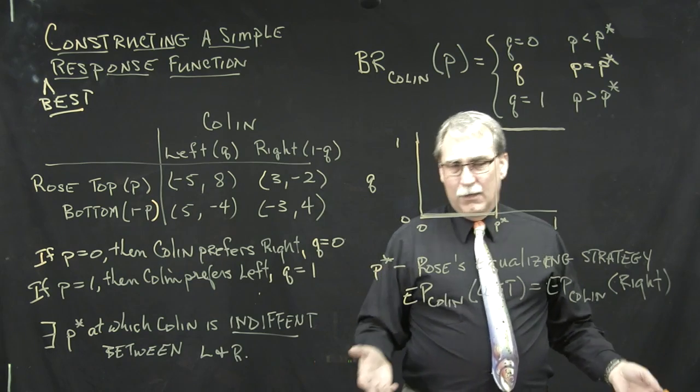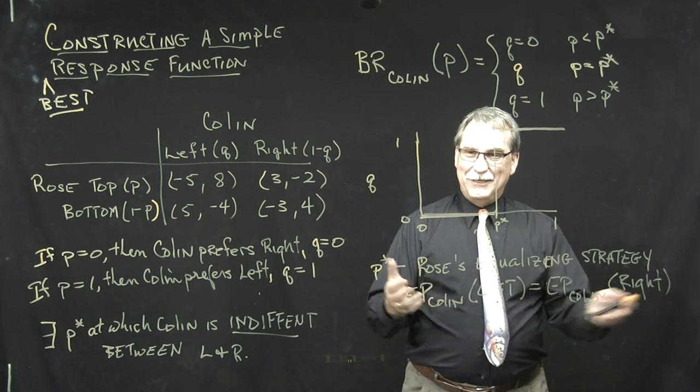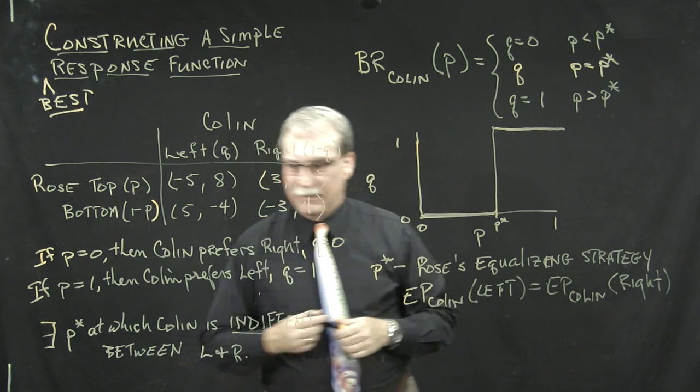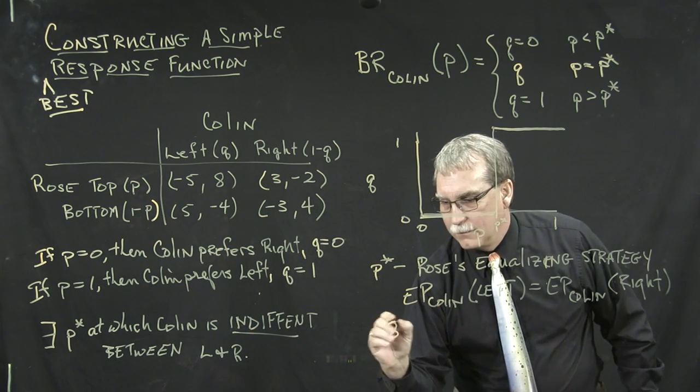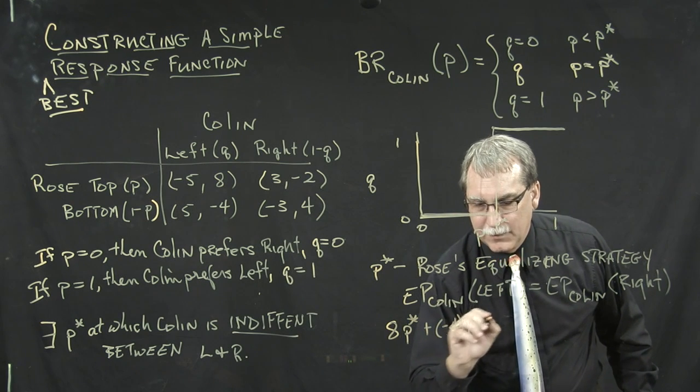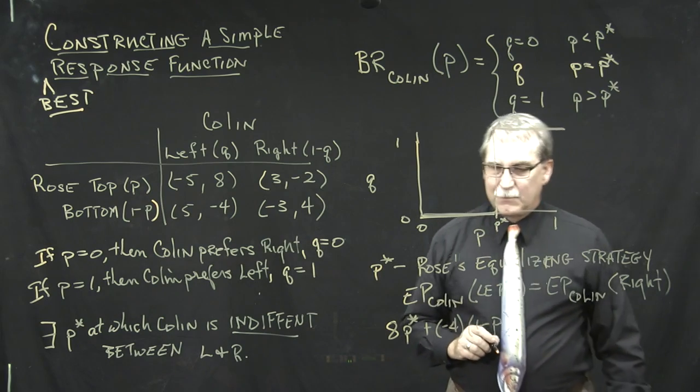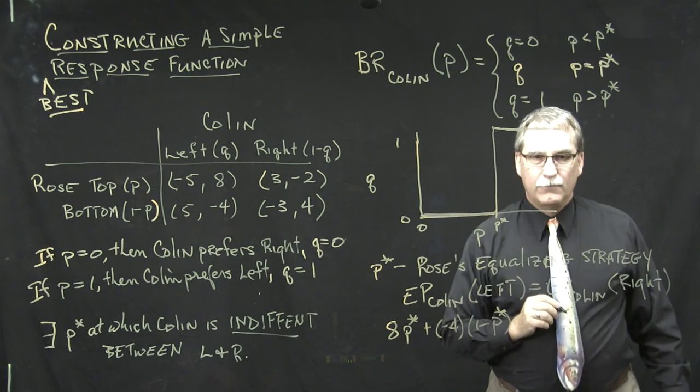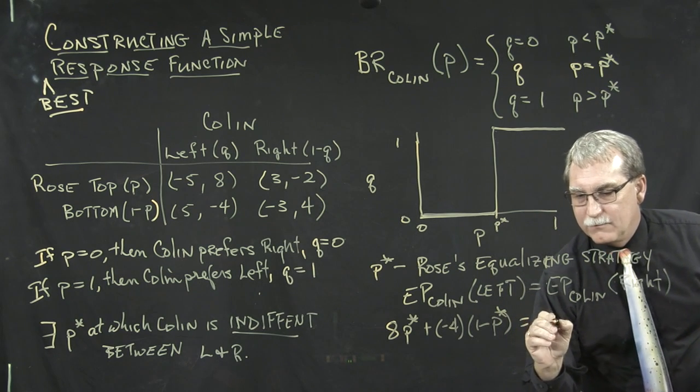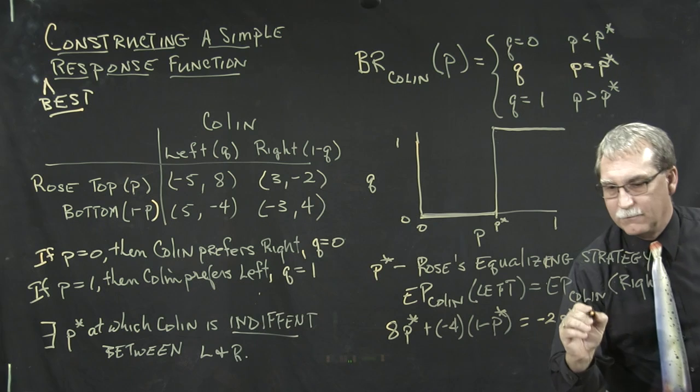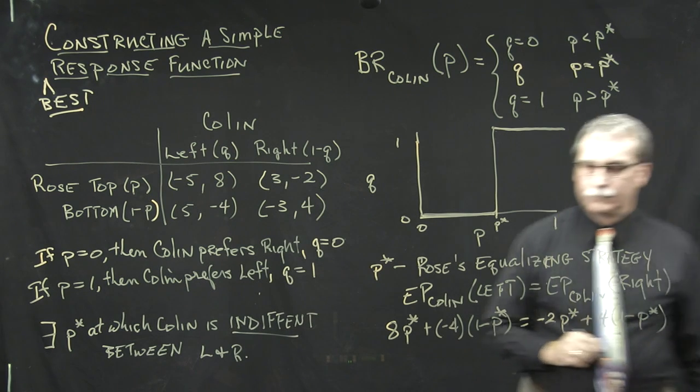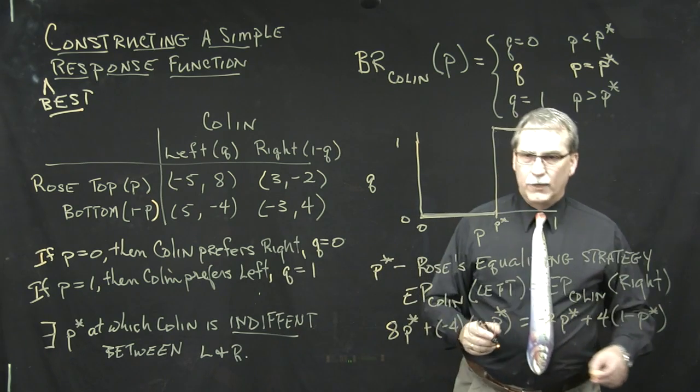So how do we calculate these things? We calculate these things the way you expect to calculate these things. You take the expected payoff, 8 times P, plus negative 4 times 1 minus P. 8 times P star, plus negative 4 times 1 minus P star. That's the expected payoff on the left. We set that equal to the expected payoff on the right, which is negative 2 times P star, plus 4 times 1 minus P star.